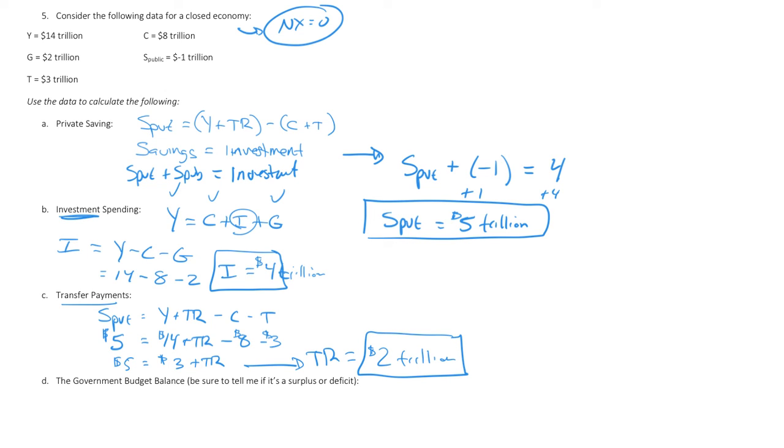And now we have the last question. The last question that we see here is the government budget balance. Now remember, the government budget balance is just public savings. It's the same exact thing, which we're given up here. So there's no calculations. It's negative $1 trillion. And because it's a negative, we know it's a deficit.